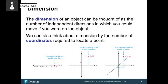The dimension of an object can be thought of as the number of independent directions in which you could move if you were the object. Coordinates tell us exactly where a point is located. A point three units to the right of zero is one-dimensional. The coordinate (2, 3) is two-dimensional, giving an x-value of 2 and a y-value of 3.